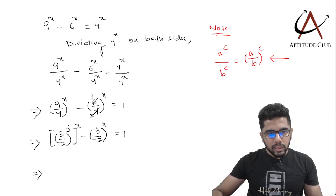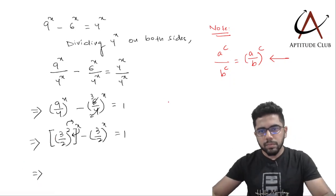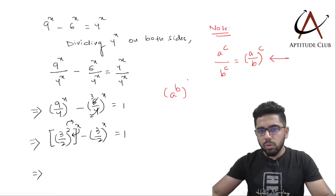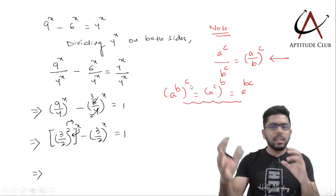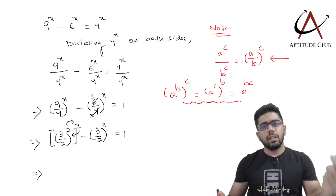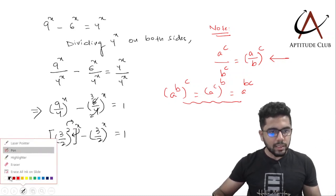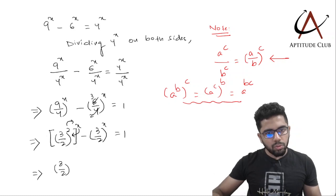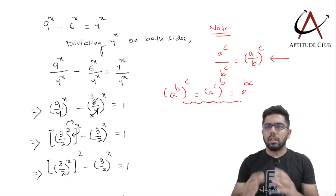What I will do is interchange the 2 and x here using the property that (a^b)^c equals (a^c)^b, which equals a^(bc) — you can interchange their positions since b and c are multiplied anyway. So (3/2)^2 whole to the power x can be written as ((3/2)^x) squared. This gives me ((3/2)^x)^2 minus (3/2)^x equals 1.